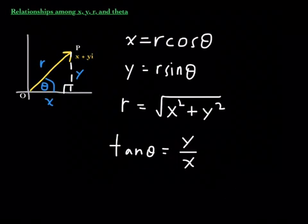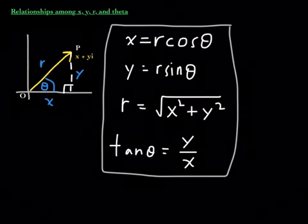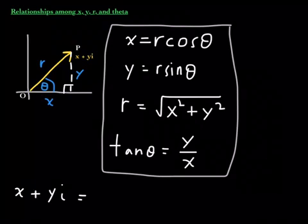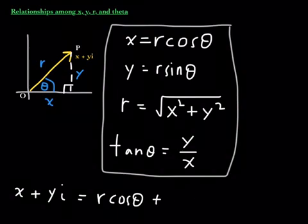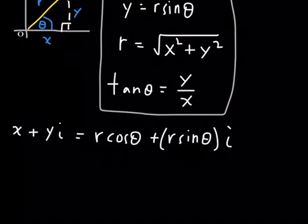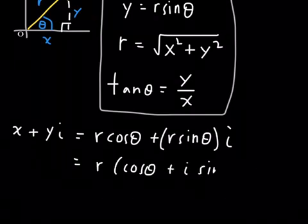Keep this information handy in your notes. Now substitute x equals r cosine theta and y equals r sine theta into the complex number x plus yi. This gives us r cosine theta plus r sine theta times i. Factor out the common factor r, leaving r times the quantity cosine theta plus i sine theta.